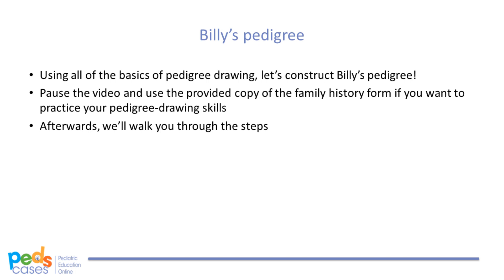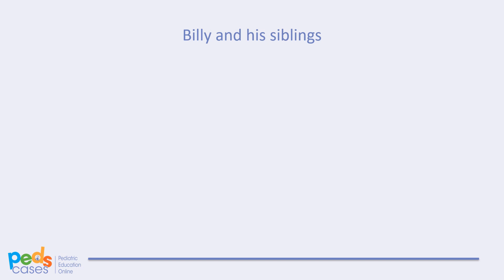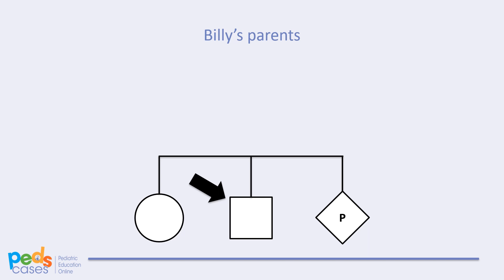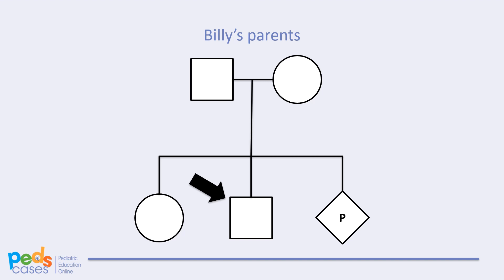Now we'll use the completed family history form for Billy to draw his pedigree. You can pause the video and attempt to construct it yourself. First, let's draw Billy and his siblings. He'll be represented by a square, and because he's our proband, we draw an arrow pointing to him. His older sister goes on his left. His mother is pregnant, so we note that to the right of Billy. Each of these individuals will have an individual line connected by a sibship line above. If doing this on paper, leave lots of space around Billy so all family members will fit. Next, we add their parents — father on the left, mother on the right — connected by a relationship line bisected by the line of descent extending down to Billy and his siblings.